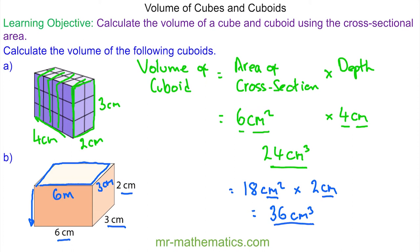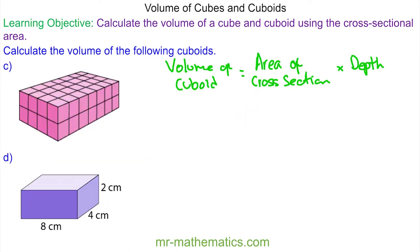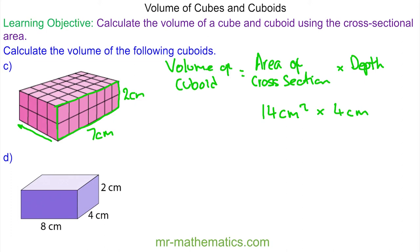Let's move on to some more questions. If you want to work out the volumes in questions C and D, you can pause the video and resume when you're ready. For question C, I'm going to choose this face here as the cross-section, which is seven centimetres by two centimetres. So the area of the cross-section is 14 centimetres squared, multiplied by the depth of four centimetres, giving 56 centimetres cubed.